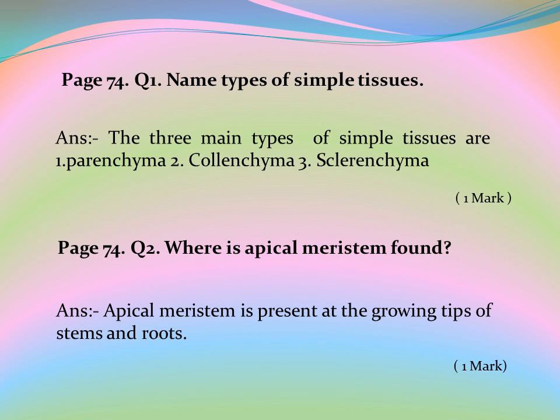Page 74, Question 2: Where is apical meristem found? Answer: Apical meristem is present at the growing tips of stems and roots.